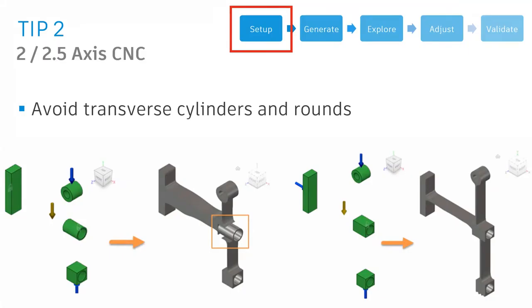When setting up a two or two and a half axis CNC project, there are a few things from the geometry setup point of view that you have to keep in mind. Unlike additive and unlike unrestricted, we have to keep in mind how our manufacturing orientation will actually affect the geometry that we've created to use as setup.